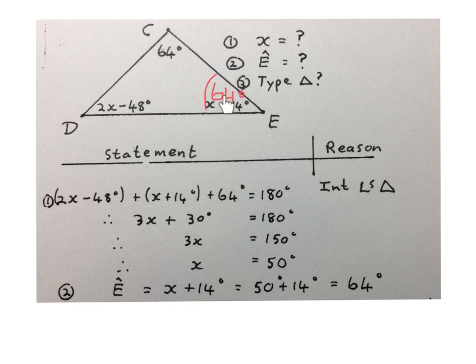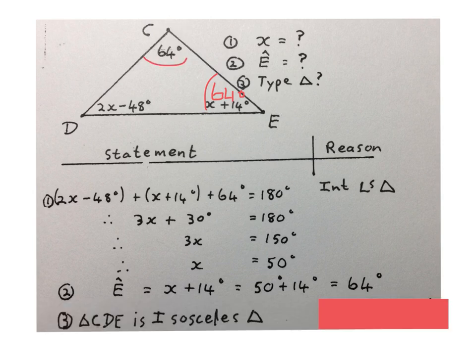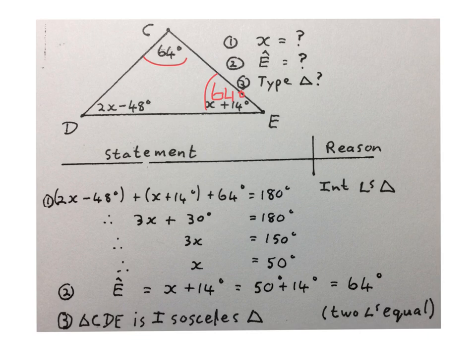We fill that in on the sketch. Next, they ask what type of triangle CDE is. The answer is: triangle CDE is an isosceles triangle, because two angles are equal. Please stop the video and work through this solution.